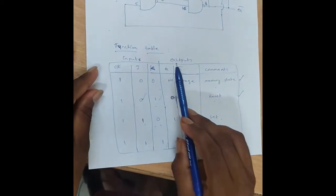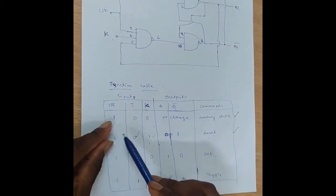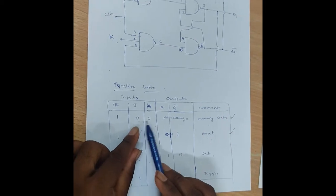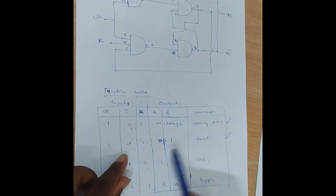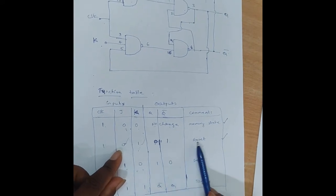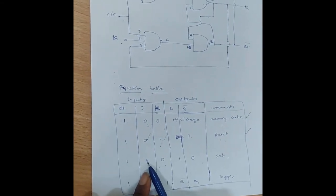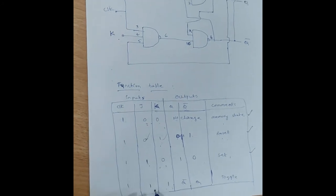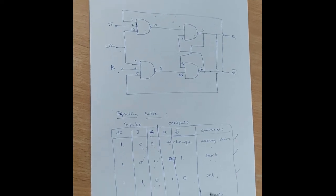This is the function table of JK flip-flops using NAND gates. CLOCK is always 1. First combination is 00, so the output is no change — that condition is the memory state. Next combination 01: outputs are 0 and 1, known as the reset condition. Next, inputs 10: outputs are 1 and 0, known as the set condition. Last combination 11: outputs are Q-bar and Q, known as the toggle condition.